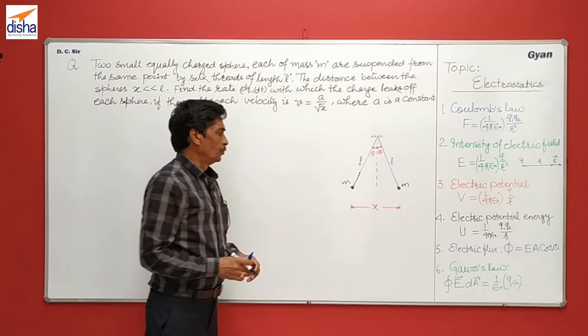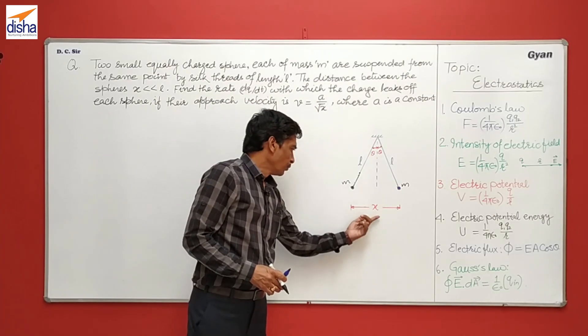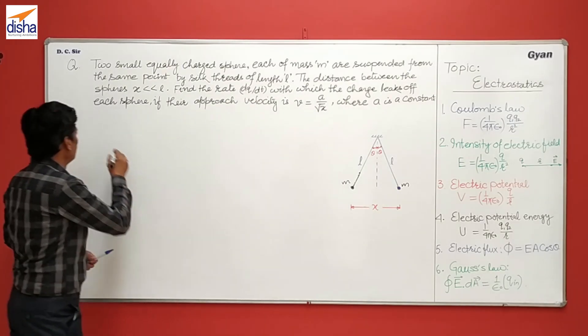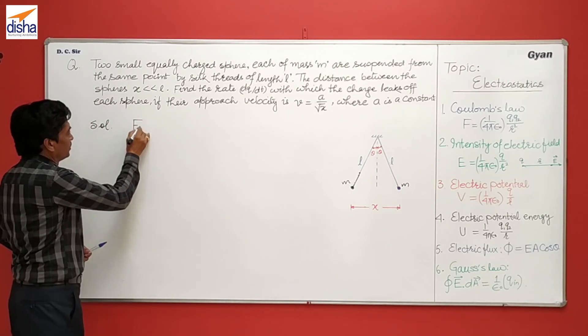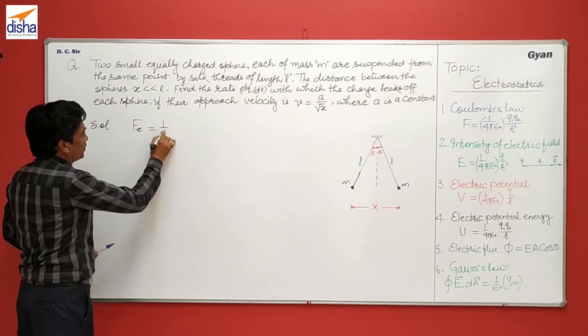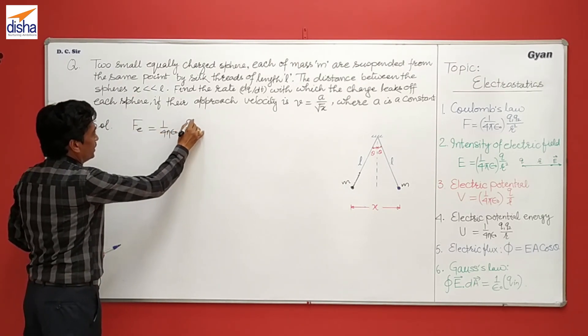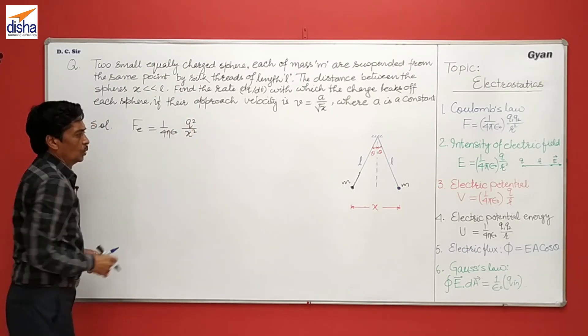And now the force between them for any separation x, by using Coulomb's law, we have Fe is equal to the constant q squared divided by x squared.